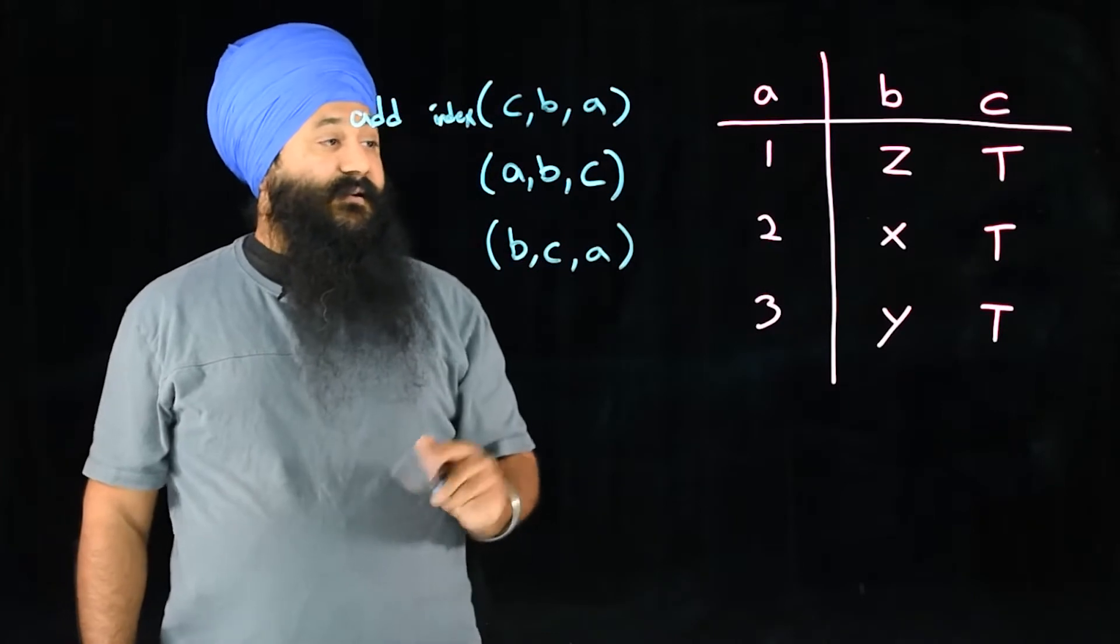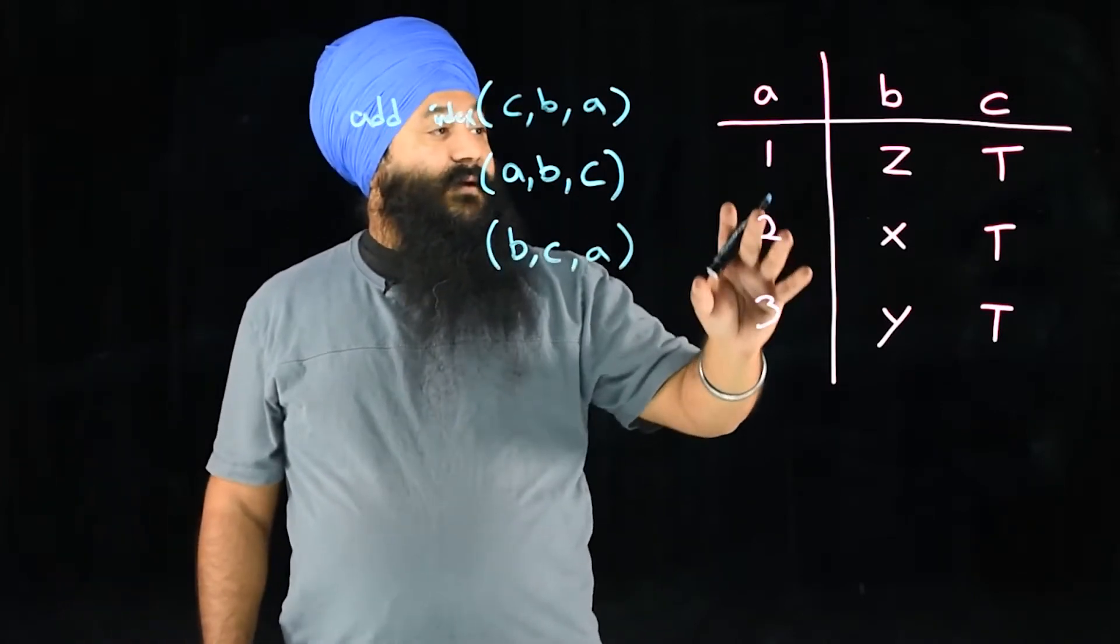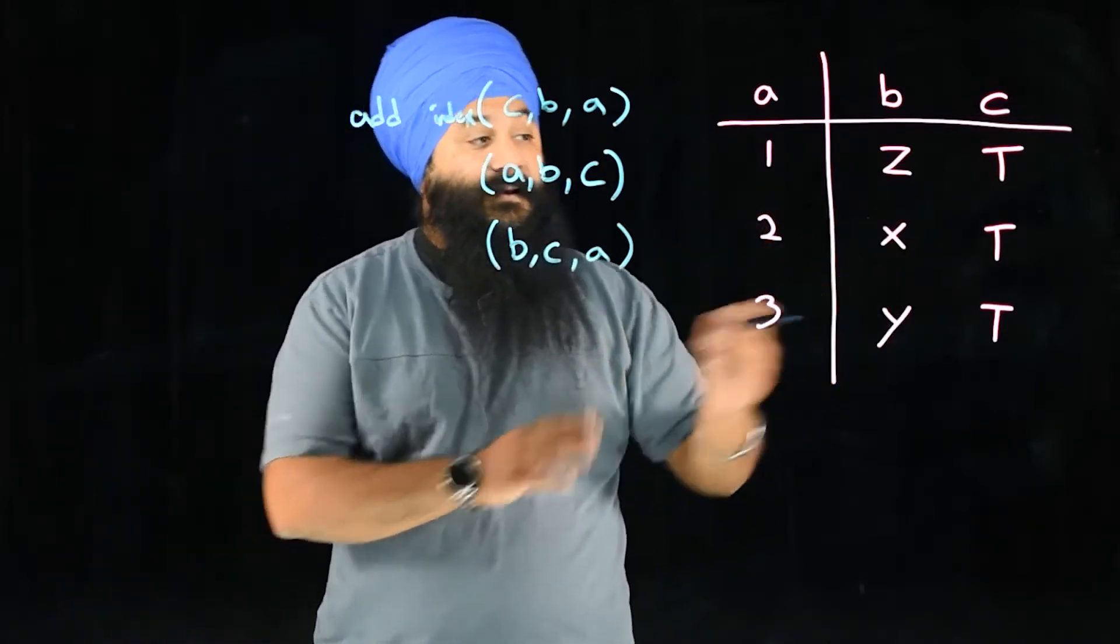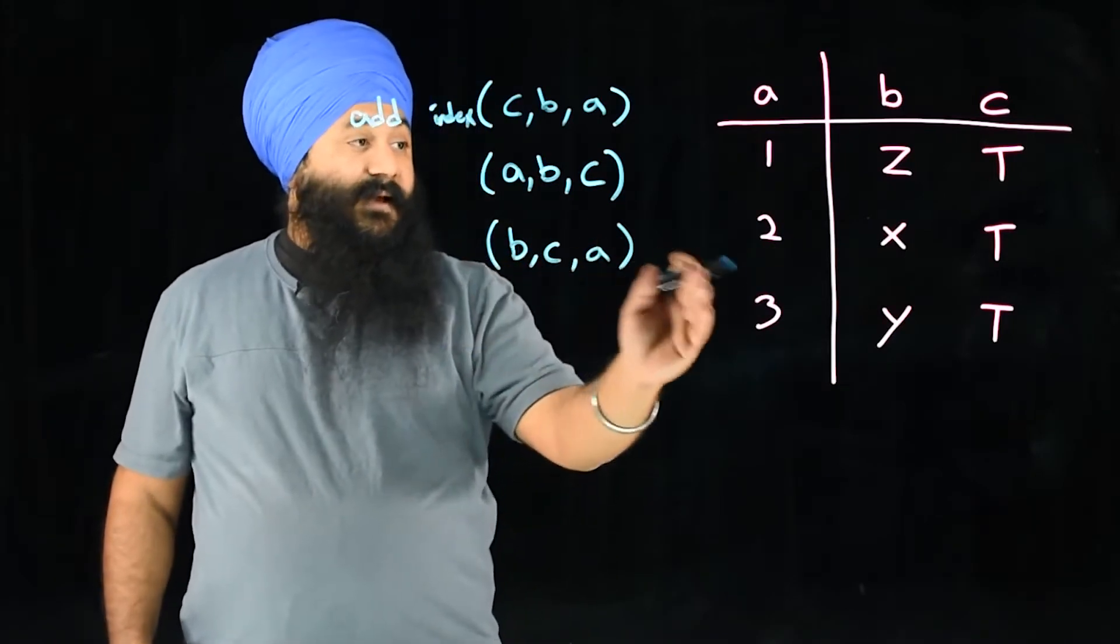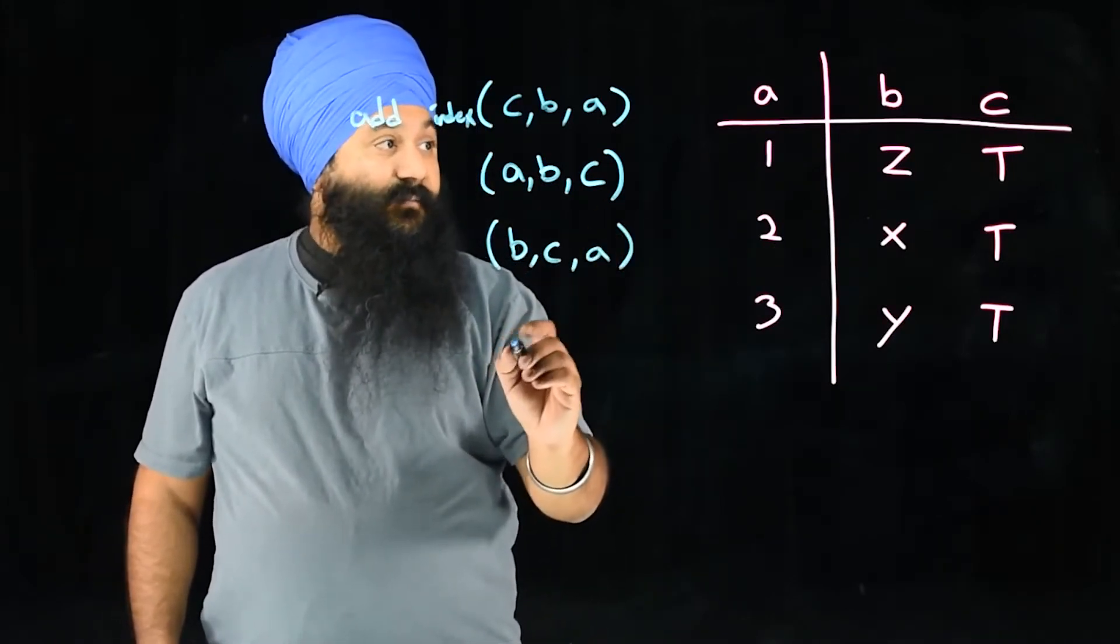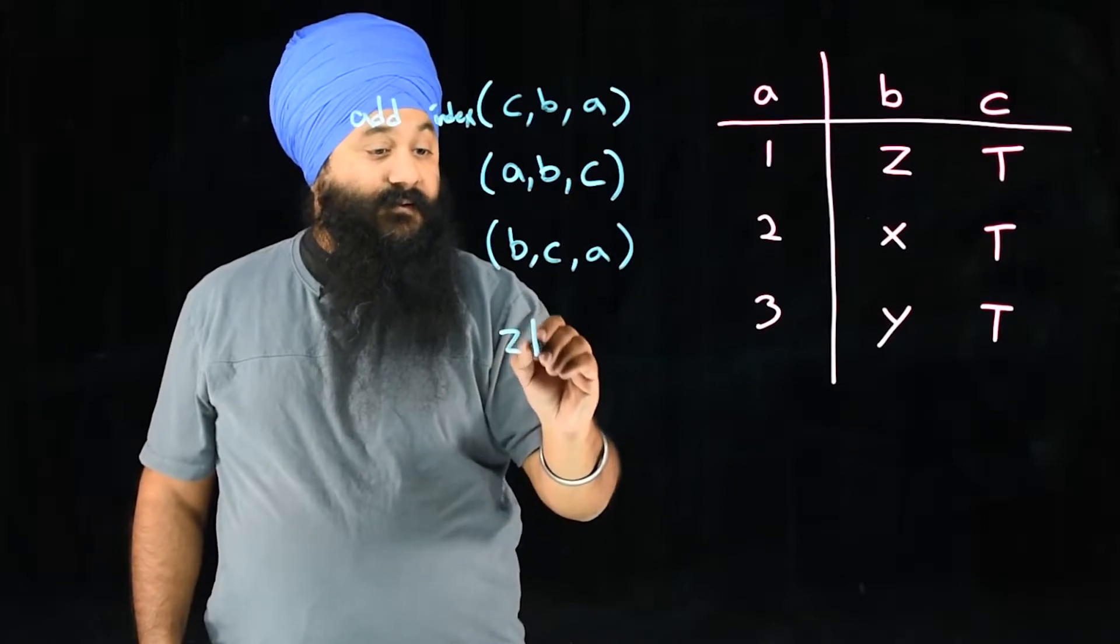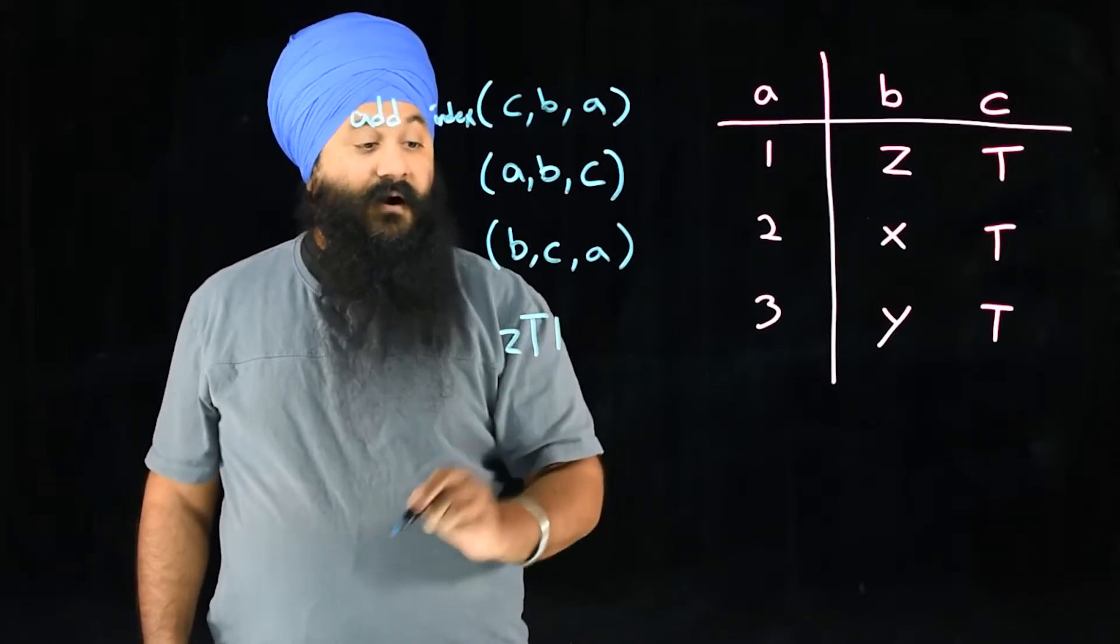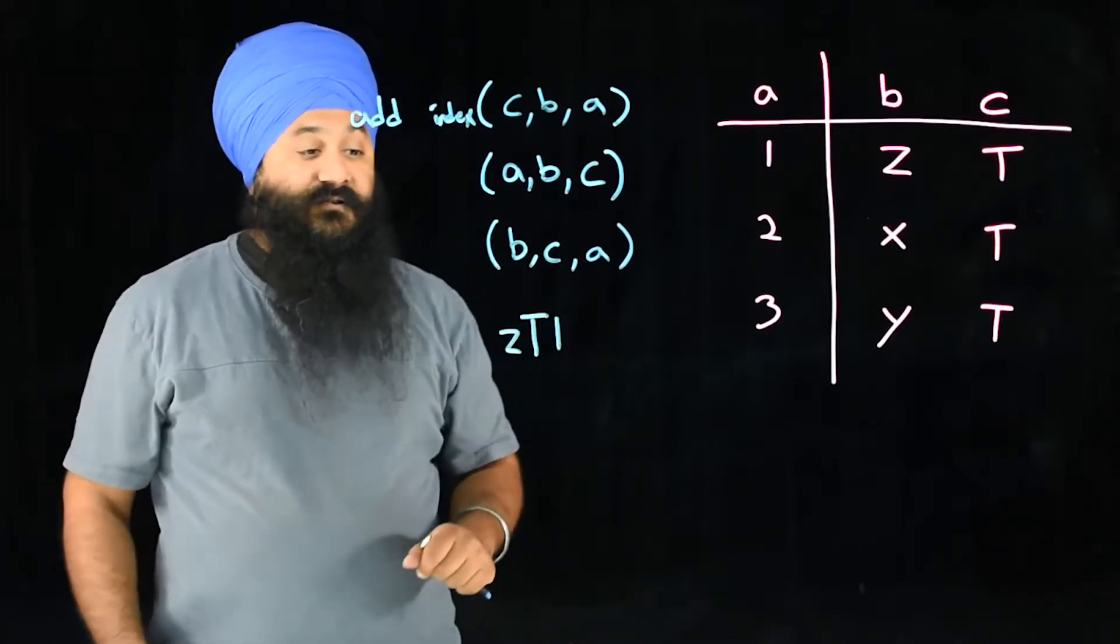So what an index actually looks like on disk is for example a concatenated column. So what BCA would look like for row one would actually be ZT1 on disk and this is how it searches through the B tree.